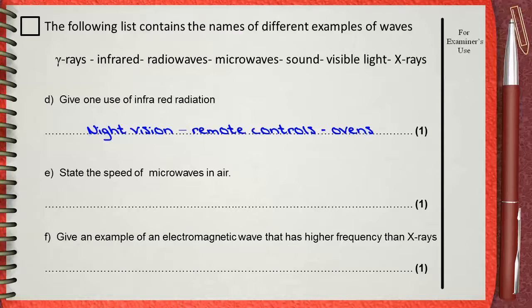Question E. State the speed of microwaves in air. Actually, we didn't study specifically what is the speed of microwaves in air, but we know that all parts of electromagnetic spectrum travel with the same speed in vacuum, 3 times 10 power 8 meters per second. This is not specific for microwaves.